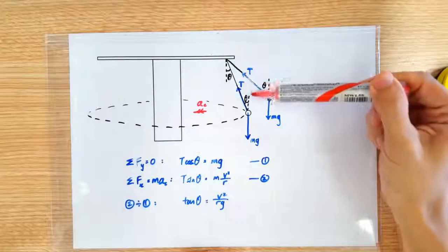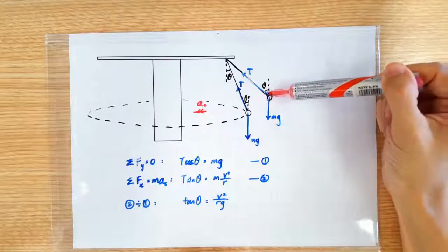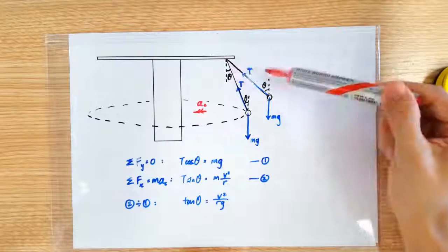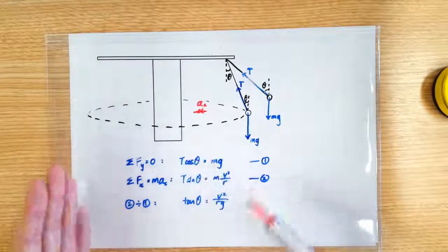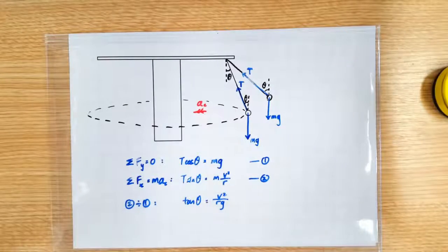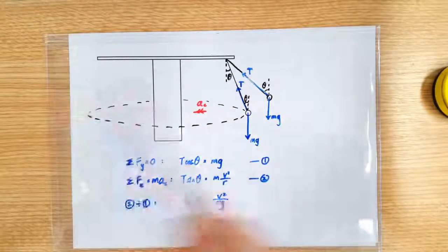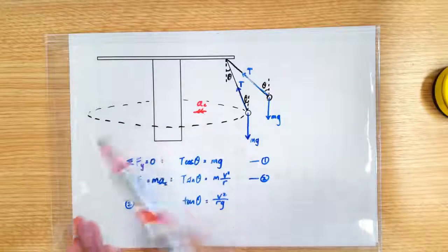So what actually happens is that the tension force will increase and the angle theta will also increase until all these equations are fulfilled again. That's why the flying chairs swing higher and higher as they go faster and faster.